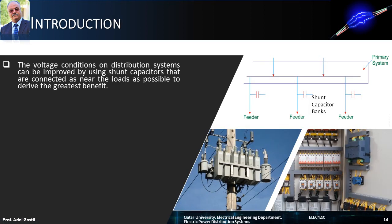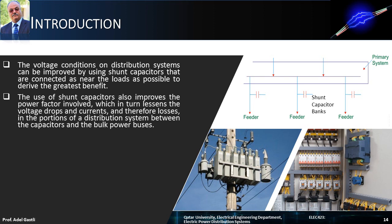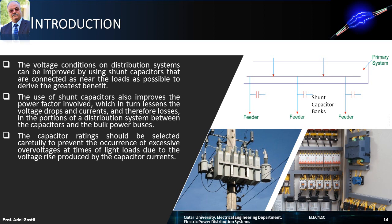The voltage conditions on distribution systems can be improved by using shunt capacitors that are connected as near the loads as possible to derive the greatest benefit. The use of shunt capacitors also improves the power factor involved, which in turn lessens the voltage drops and currents, and therefore losses, in the portions of a distribution system between the capacitors and the bulk power buses. The capacitor ratings should be selected carefully to prevent the occurrence of excessive overvoltages at times of light loads, due to the voltage rise produced by the capacitor currents.